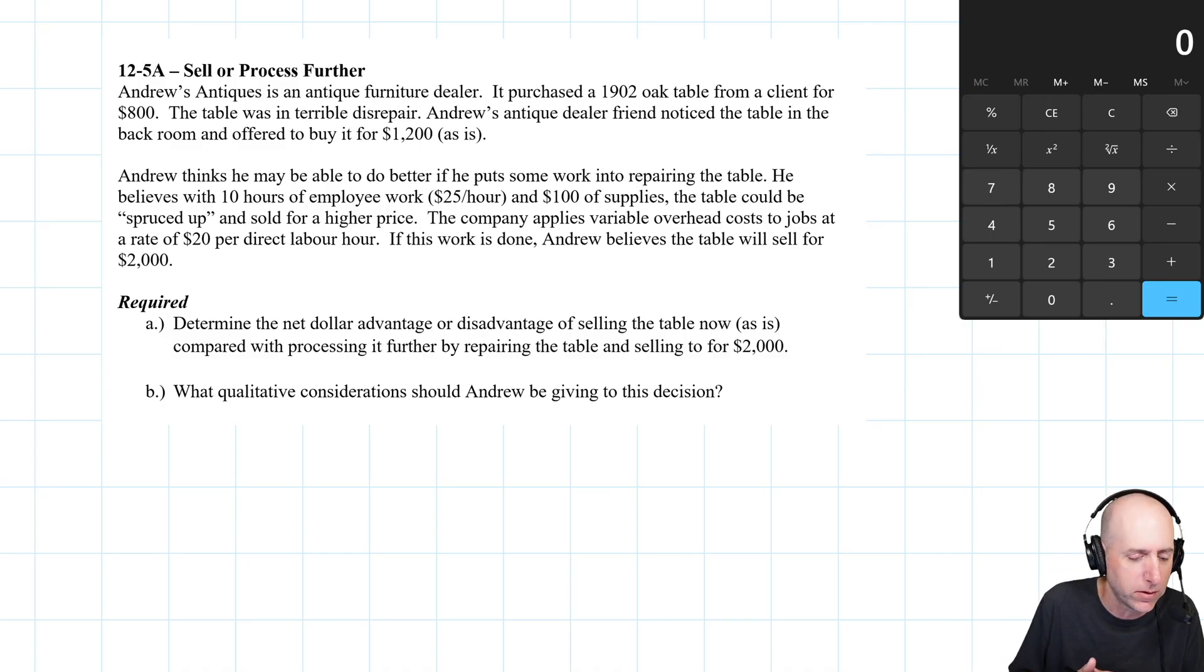Andrew thinks he may be able to do better if he puts some work into repairing the table. He believes with 10 hours of employee work at $25 an hour and $100 of supplies, the table could be spruced up and sold at a higher price. The company applies variable overhead costs to jobs at a rate of $20 per direct labor hour. If all this is done, Andrew believes the table will sell for $2,000.